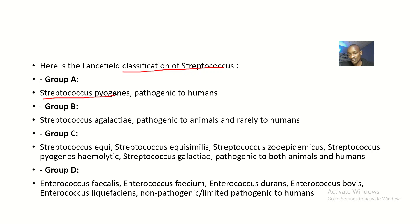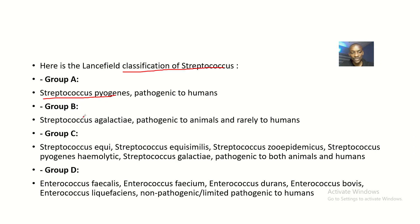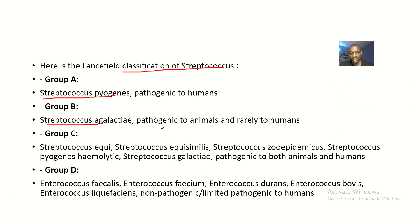We have Group A with Streptococcus pyogenes, which is pathogenic to humans. We have Group B with Streptococcus agalactiae, which is pathogenic to animals and rarely to humans.